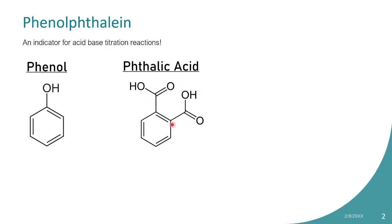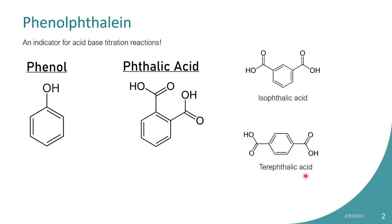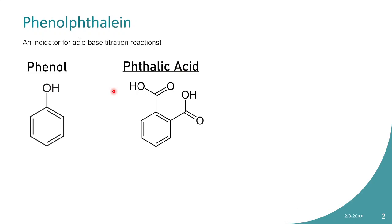The two carboxylic acid groups are in an ortho relation. There can also be isophthalic acid and terephthalic acid. In isophthalic acid, the two carboxylic acid groups are in meta relation, and in terephthalic acid they are in para relation. If there is no 'iso' or 'tere,' then it is simply phthalic acid — the ortho form.